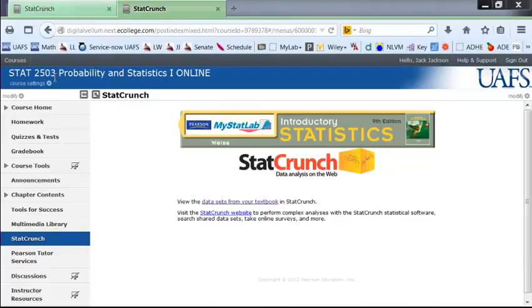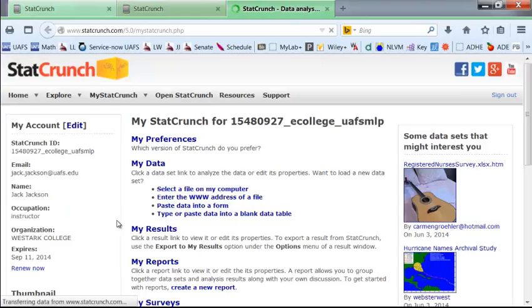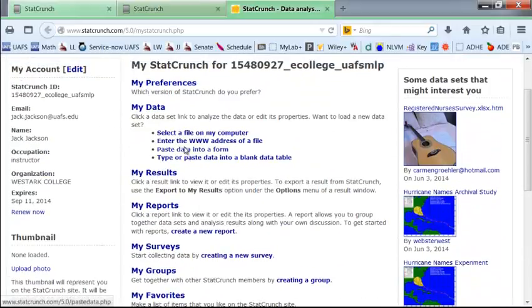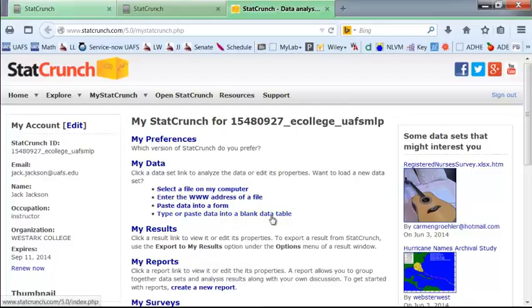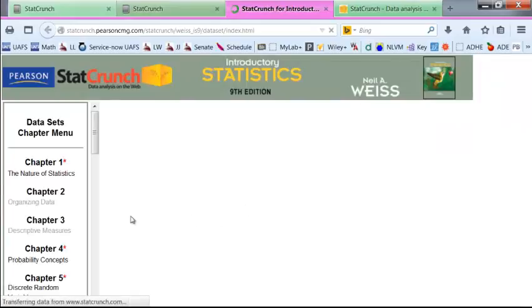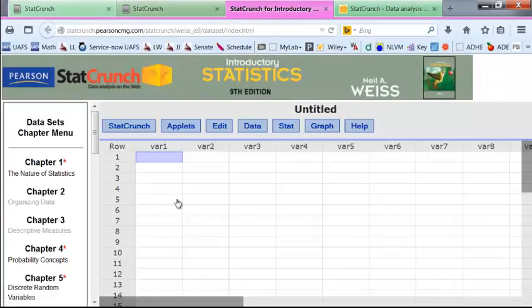In our MyStatLab site for our class, we can click on the StatCrunch link here, which takes us to here. I'm just going to go to the website here, and notice here you can pull up different kinds of data sets, or we can go from here and select data from our computer. Actually, I can just type in data here. For what I want to do right now, I'm going to use one of these applets.